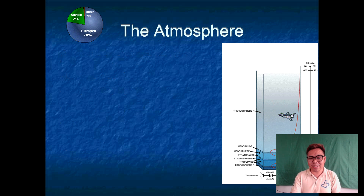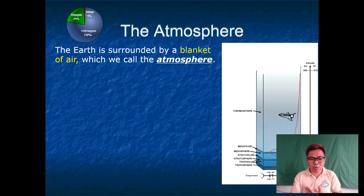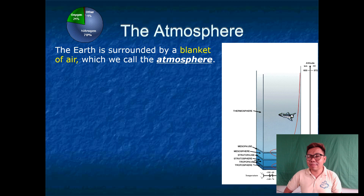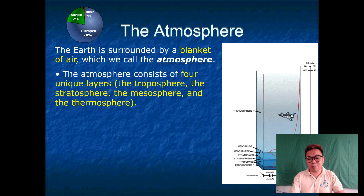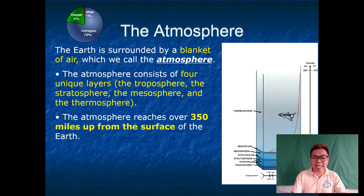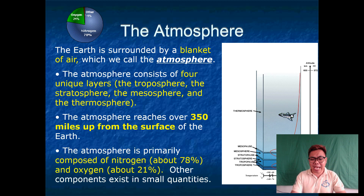Let's start with the atmosphere. The Earth is surrounded by a blanket of air which we call the atmosphere — it wraps the Earth with air as a barrier shield against different kinds of debris. The atmosphere consists of four unique layers: the troposphere, stratosphere, mesosphere, and thermosphere. It reaches over 350 miles up from the surface of the Earth, and is primarily composed of nitrogen at about 78% and oxygen at 21%, with other components existing in small quantities.